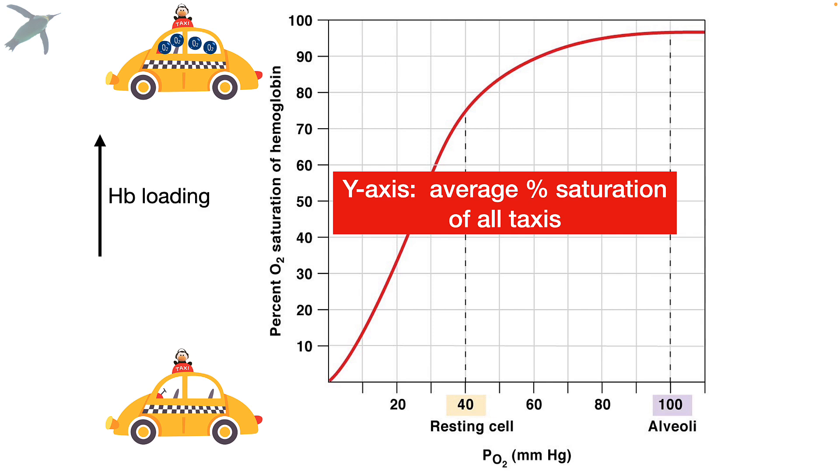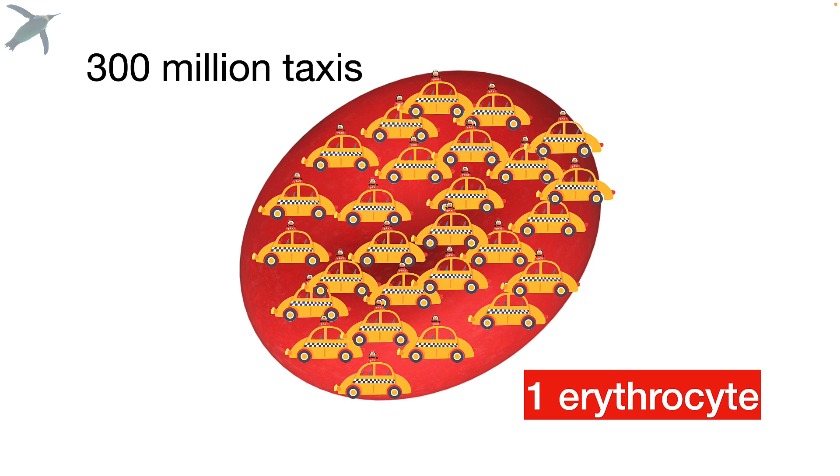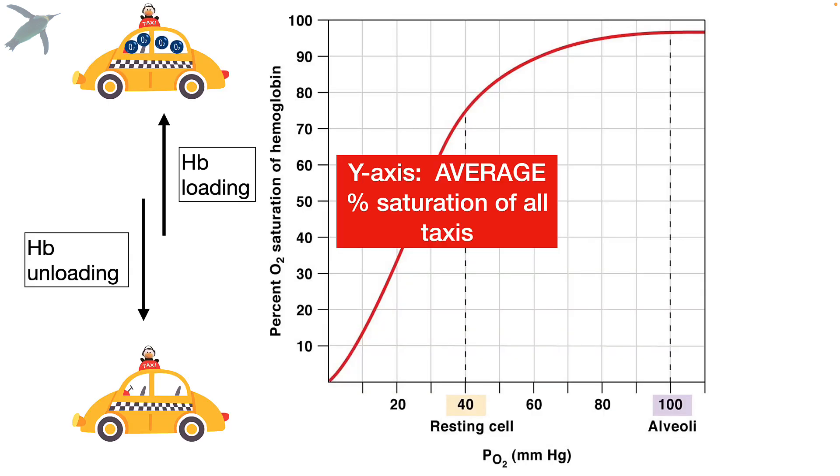So when we go up on the y, that is hemoglobin loading with oxygen. And when we go down on the y, that is hemoglobin unloading oxygen. Now one erythrocyte can have about 300 million taxis on it. So this is an average. It's the average percent saturation of all taxis.